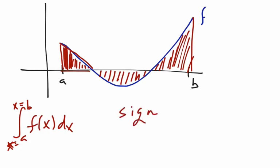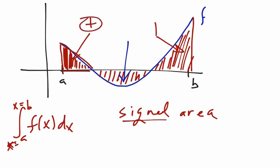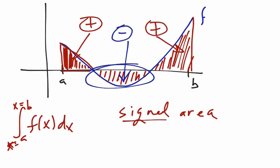Remember the word 'signed' — there is signed area. We have to distinguish between area that lies above the x-axis and area that lies below the x-axis. Any area that lies above the x-axis is positive area, and any area that lies below the x-axis is negative area.